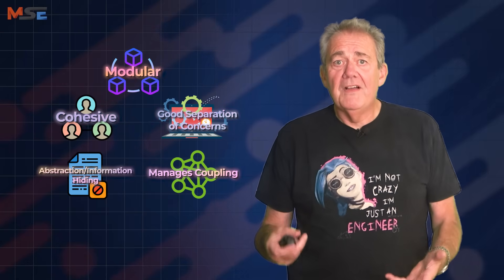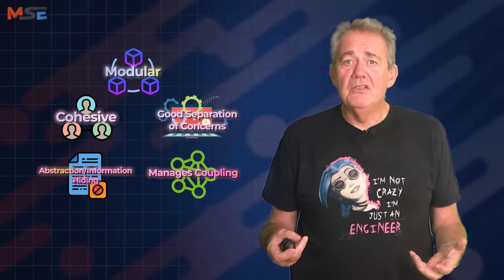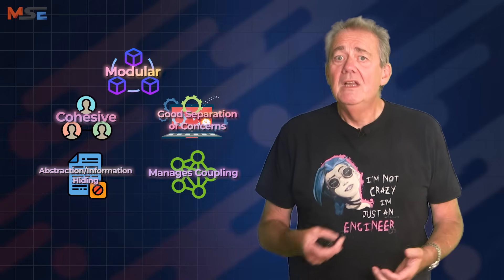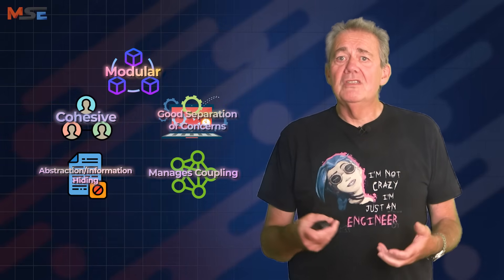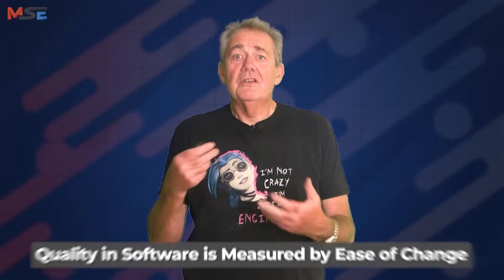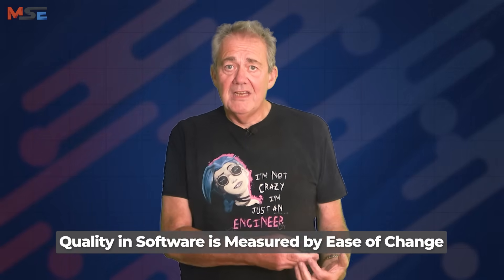You can't go fast or safely if every simple change requires spelunking through 14 different subsystems and checking your understanding against a wiki written in 2009. This ideal is the narrative version of something I say all the time: the quality of a system is defined by how easy it is to change it. If your system is hard to change, that's a bug.